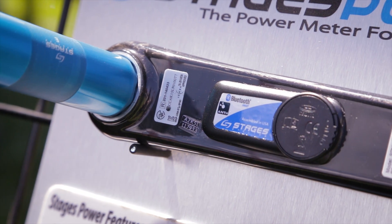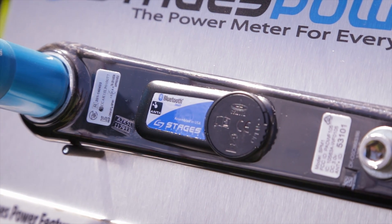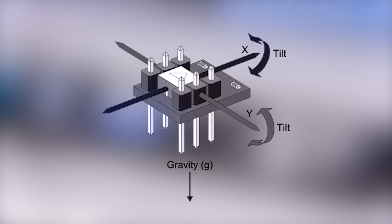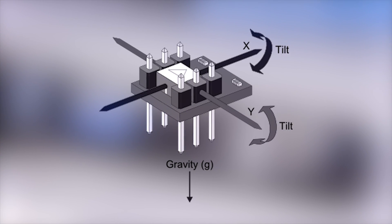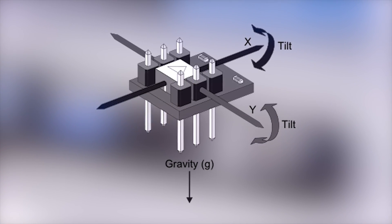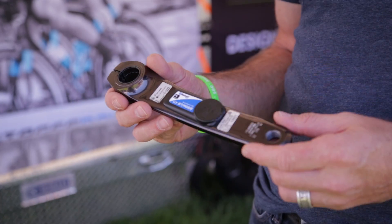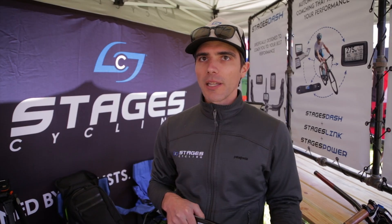The second component we need to measure power is an accelerometer. Much like you would have in your smartphone to change from portrait to landscape, we're using that device to measure how fast you're pedaling. Once you have those two metrics, then you can calculate power. It's as simple as that.